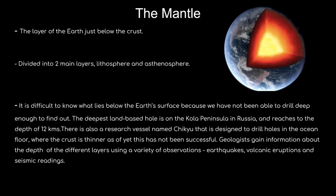The mantle is the layer of the Earth just below the crust, divided into two main layers: the lithosphere and the asthenosphere. It is difficult to know what lies below the Earth's surface because we have not been able to drill deep enough. The deepest land-based hole is in the Kola Peninsula in Russia, reaching a depth of 12 kilometers. There is also a research vessel named Chikyu designed to drill holes in the ocean floor where the crust is thinner, but this hasn't been successful due to high pressure and temperature. Geologists gain information about the depth of different layers using earthquakes, volcanic eruptions, and seismic readings.